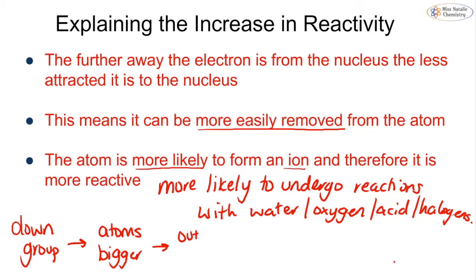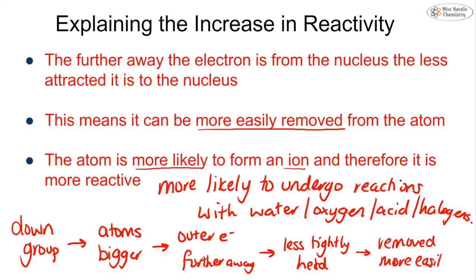So the outer electron is further away. So it is less tightly held. Therefore, it is removed more easily. And the more easily it is removed, the more likely it is to react. This is why your reactivity increases as you go down the group. That outer electron becomes much easier to remove.